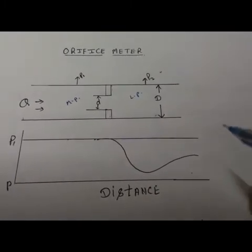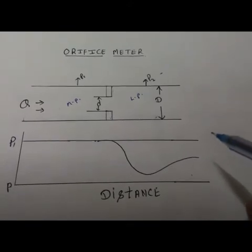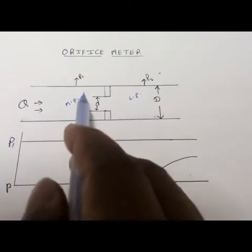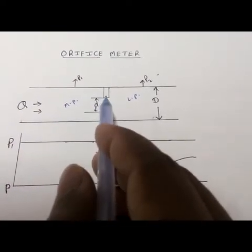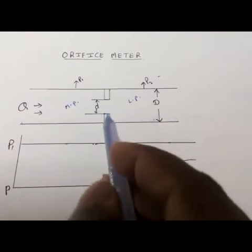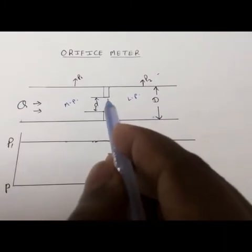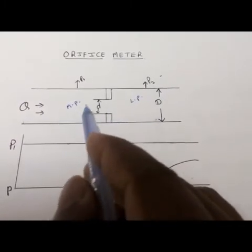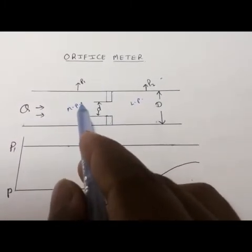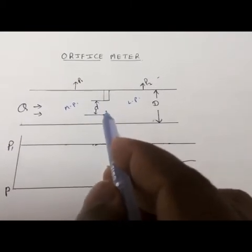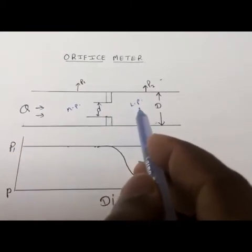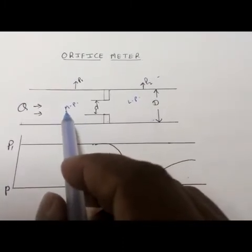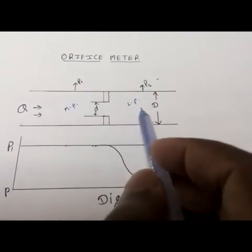This is the line diagram of the orifice meter. Here flow is flowing from this side. This is the larger area; an orifice meter is set at the middle of the pipe, where the area is reduced, and then again there is the larger area. Before the orifice we have more pressure, but after passing through the orifice meter we get less pressure — but the velocity increases. Here velocity is lesser, and after the orifice meter velocity is higher.